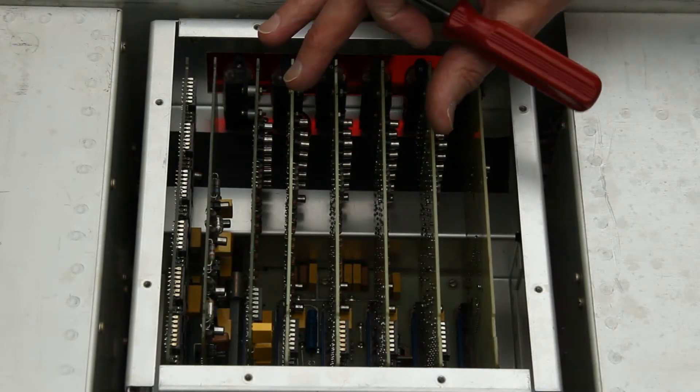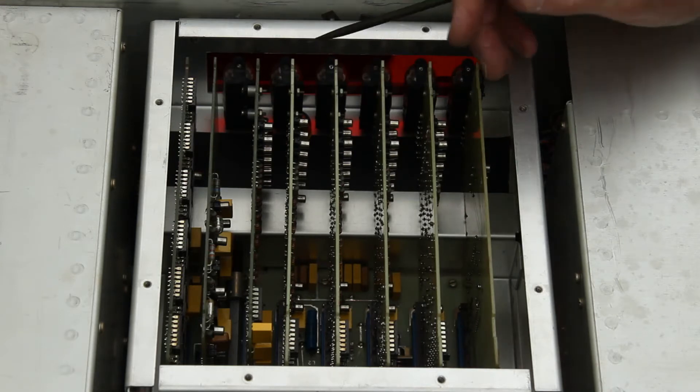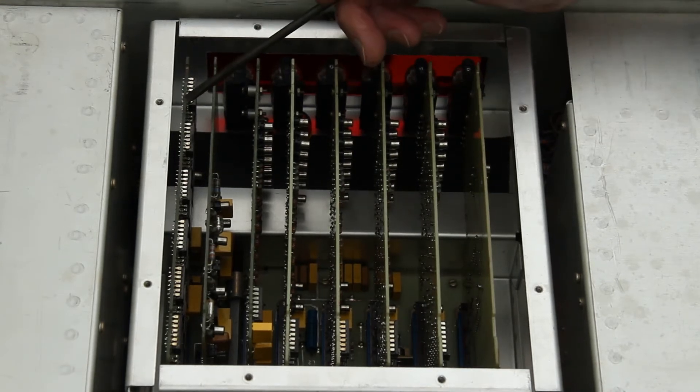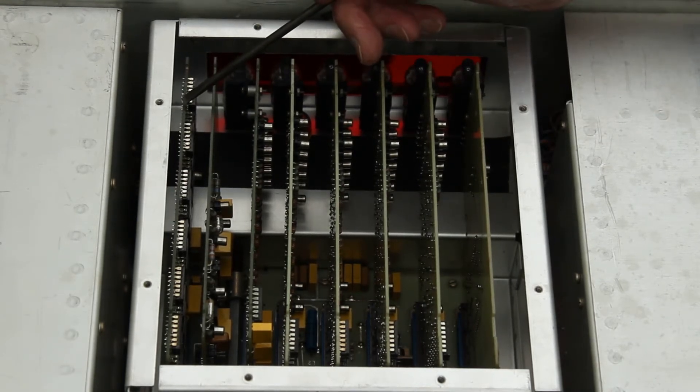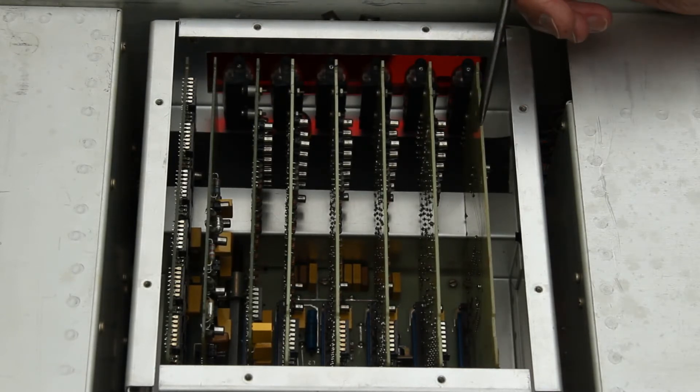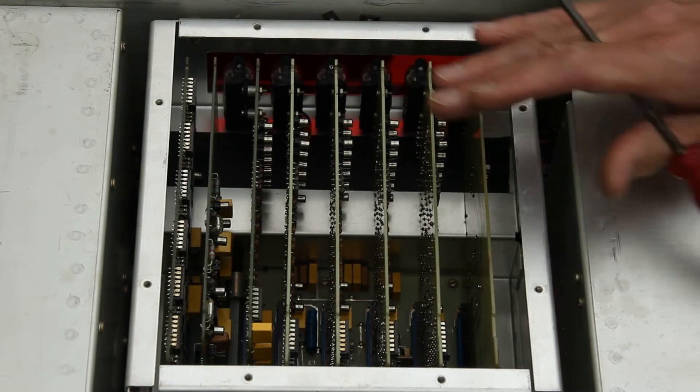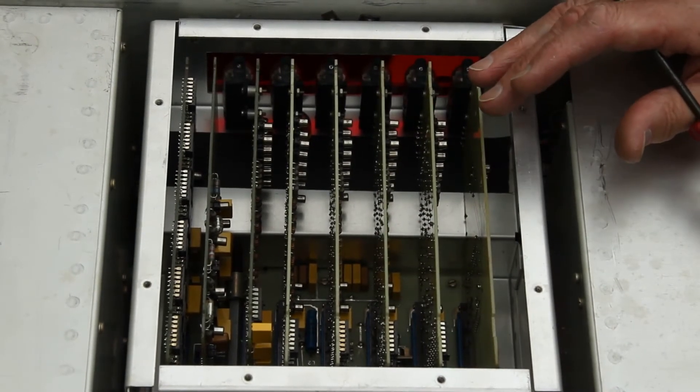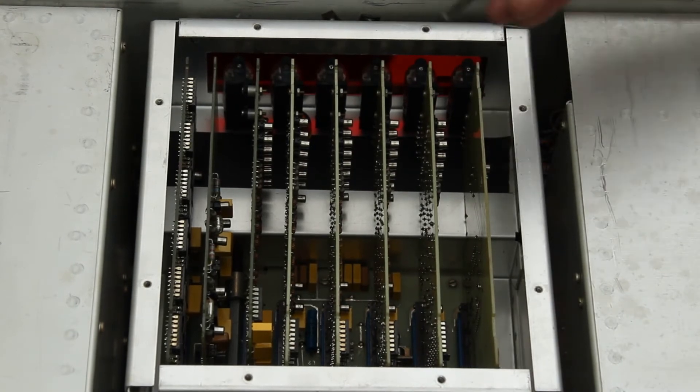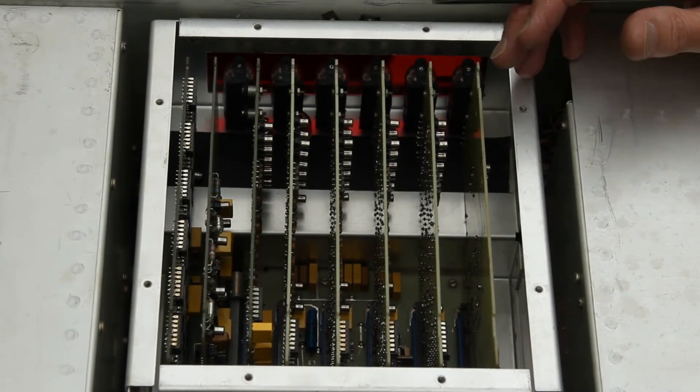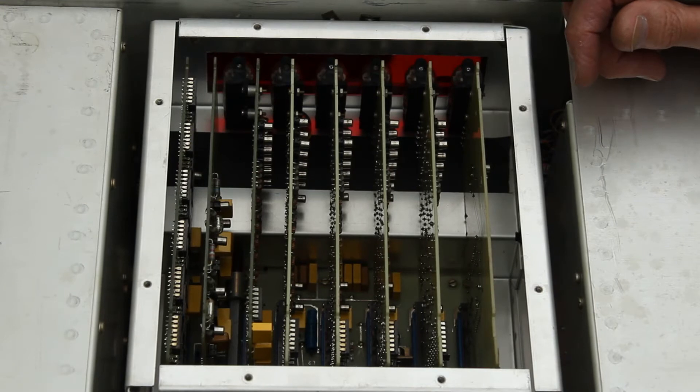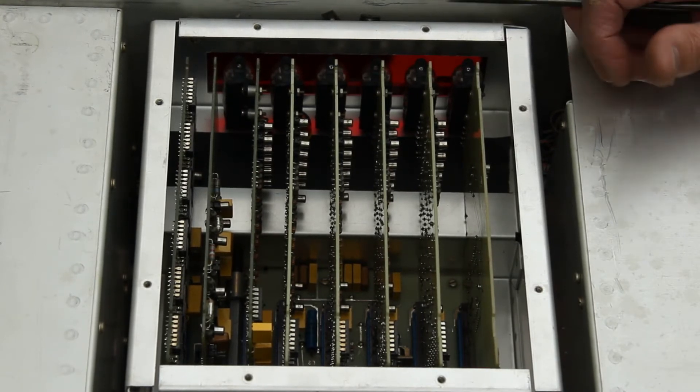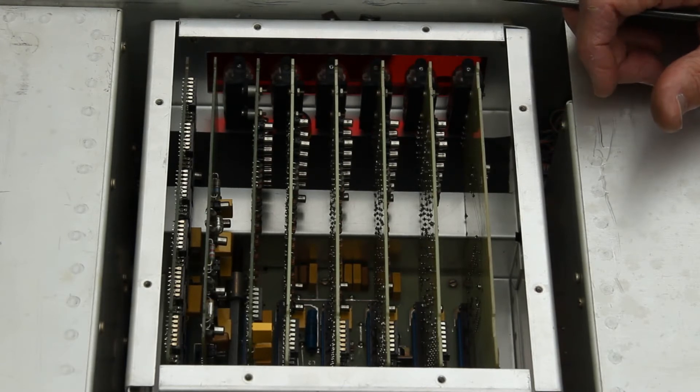So as I said, these boards comprise the counter, these are the display boards with the Nixie tubes on the end, there's the time-based board which generates the pulses which are counted, and of course there's also the resetting has to go on as well, and that board right up at the end is responsible for reset.